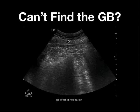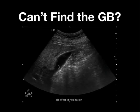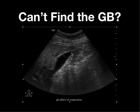What if you're scanning and you can't find the gallbladder? You're as close to the costal margin as possible and all you see is dirty shadowing from bowel gas. What you should do is have the patient take in a deep breath. Now you can see the liver and the gallbladder. Remember, anything close to the diaphragm is going to be affected by respiration, and having the patient take in a deep breath will help you in visualizing the gallbladder.